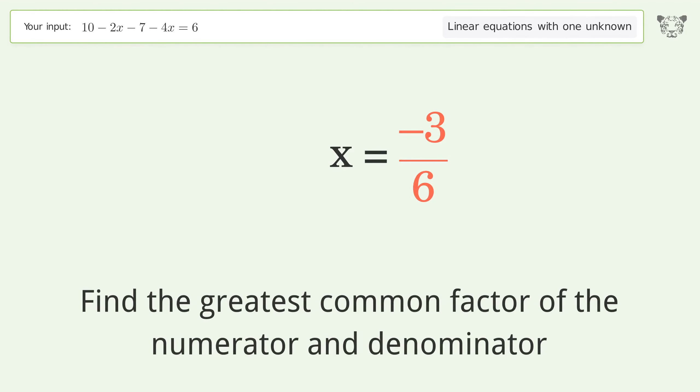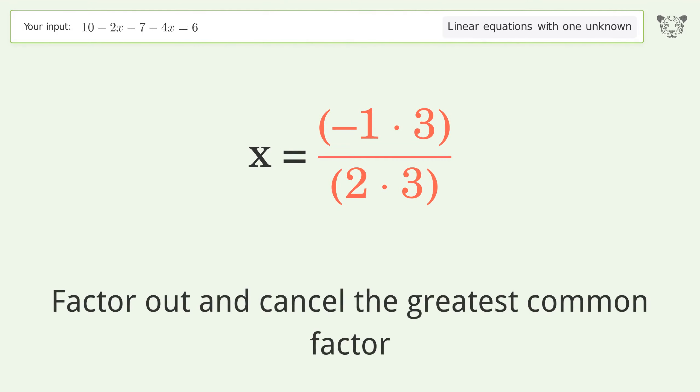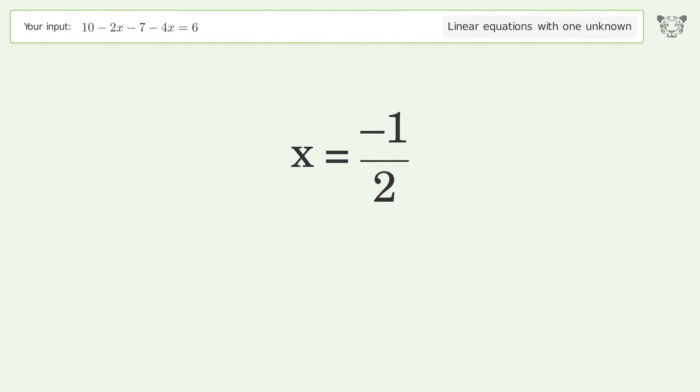Find the greatest common factor of the numerator and denominator. Factor out and cancel the greatest common factor. And so the final result is x equals negative one over two. Thank you.